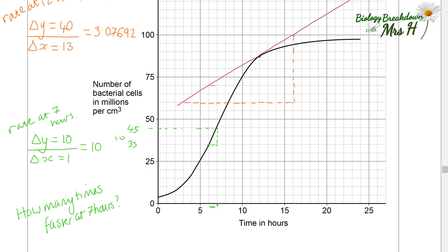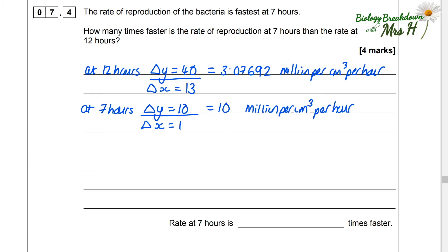So then what we have to do is to work out how many times faster 10 is compared to 3.07692. So what we do is 10 divided by 3.07692 and that gives us an answer of 3.25 times faster. Now the mark scheme allows any final answer between 2.9 and 3.4 so I'm really happy that I got 3.25.